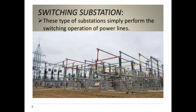Switching Substation. What does this substation mean? It simply performs the switching operation. For example, a 110 kV substation has three or four feeders and incoming feeders. In that substation, we have to look at the bus bar. There is no step-down transformer — we look at the voltage level. A switching substation performs a switching operation.